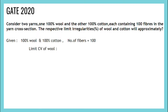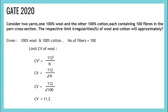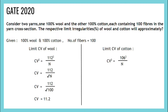We know that CV squared equals 112 squared upon N. So substituting N as 100, we get CV as 11.2 for wool. And limit CV of cotton: it is 106 squared upon N, so substituting N as 100, we will get CV as 10.6.